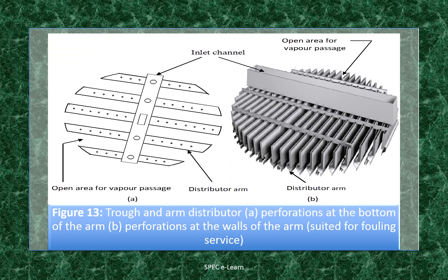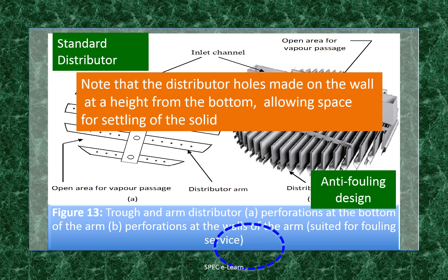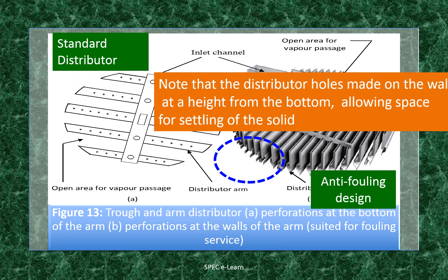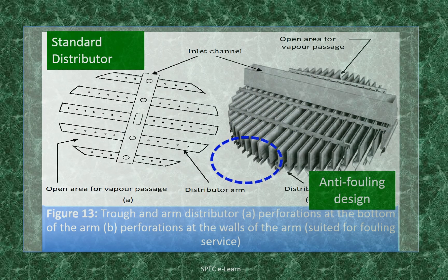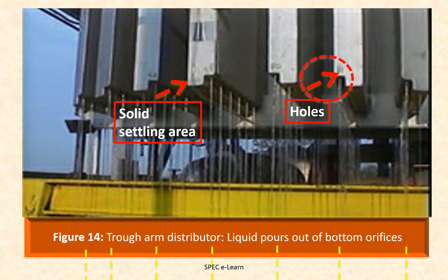For fouling services, we cannot use standard distributors meant for clean liquid — fouling-resistant distributor design is needed to obtain design performance on a sustainable basis. One such design has distributor holes made on the wall at a height from the bottom, allowing space for settling of solids. Another distributor design for fouling services has the base of the distributor arm at a raised level from the bottom where solids can settle down, allowing clear liquid to flow from the holes.